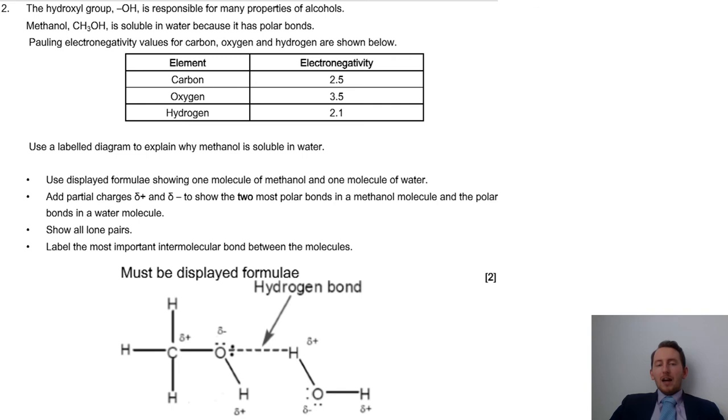So this is what we have to have. We have our displayed formula of our methanol and our molecule of water - our first point is taken care of. Second point: partial charges. Oxygen is going to be slightly delta negative, and the carbon and the hydrogen will be slightly delta positive. We then have showing lone pairs. Oxygen is going to have the lone pairs, so each oxygen has two lone pairs. And then we also need to show anything else going on, showing those intermolecular forces between the molecules. That's where we're going to have a hydrogen bond from one of the lone pairs on the oxygen going to the hydrogen. That's what we need there.